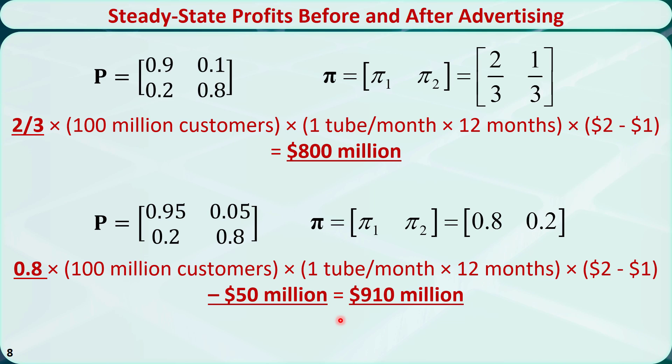That is how to calculate the steady state distribution of an ergodic Markov chain and use it for decision making. Thanks for watching.